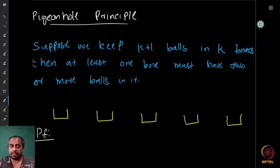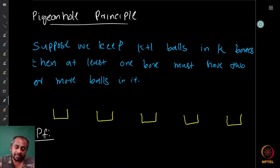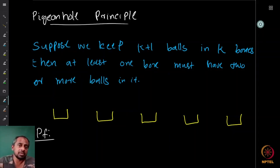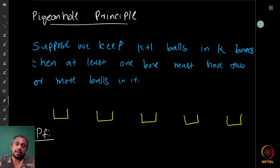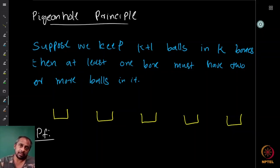Now if k plus one pigeons sit into k cages, then we can say that at least one of the cages must contain two or more pigeons inside. This is easy to see because if every cage had at most one pigeon, there are k cages so there is at most k times one, which is at most k pigeons inside.